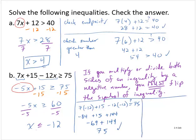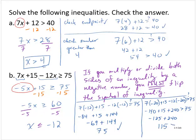Now let's check a number less than negative 12 — how about negative 20? Is 7 times negative 20 plus 15 minus 12 times negative 20 greater than or equal to 75? Going back to the original inequality: negative 140 plus 15 plus 240 — negative 140 plus 15 is negative 125, and negative 125 plus 240 is 115, which is greater than 75. So that checks out, and I can be confident in my solution.